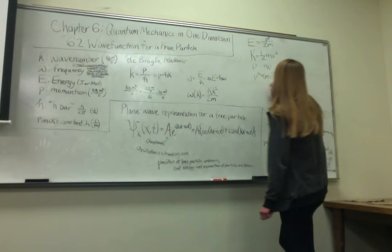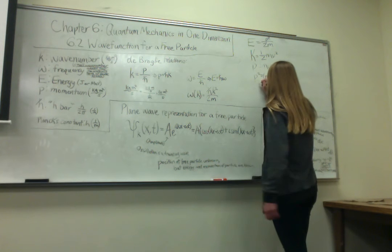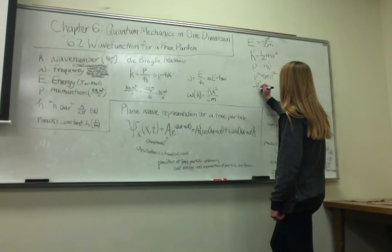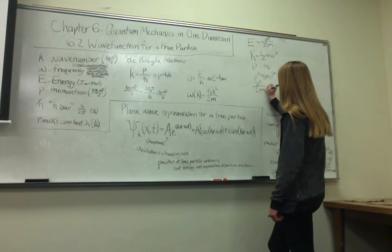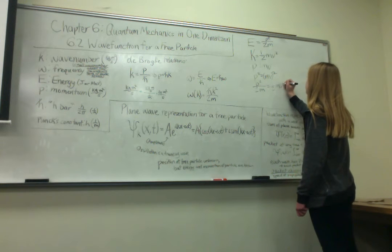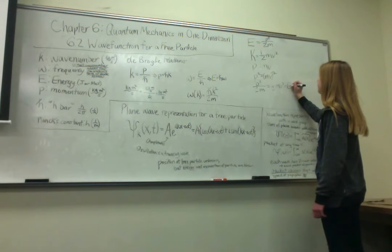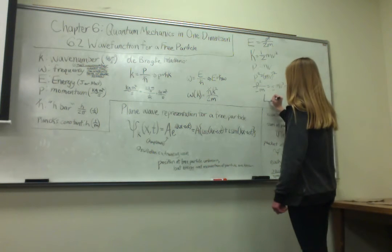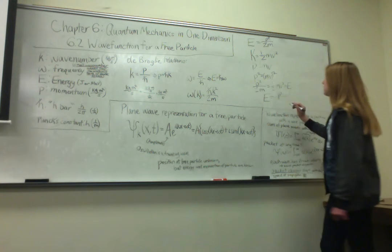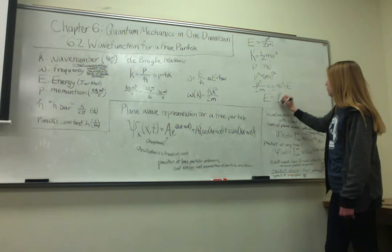And then we take p-squared over 2m to get the other side to equal 1 half mv-squared, which equals our energy. So then we get the equation that we were trying to find in the beginning, which is E equals p-squared over 2m.